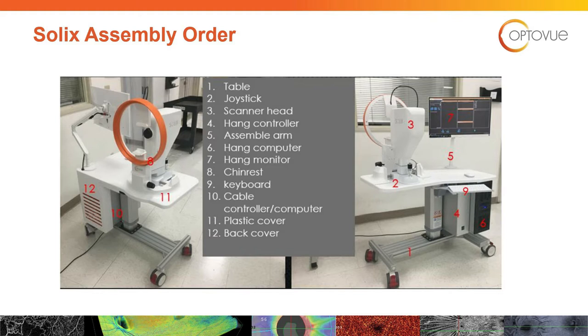Place the joystick assembly onto the rails and attach the covers. Lock the joystick down, then place the scanner head on top of the joystick and hang the control box.